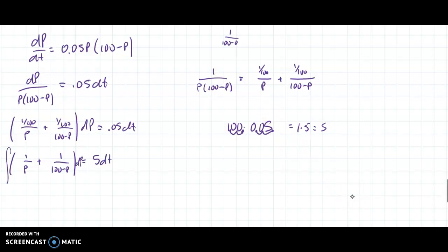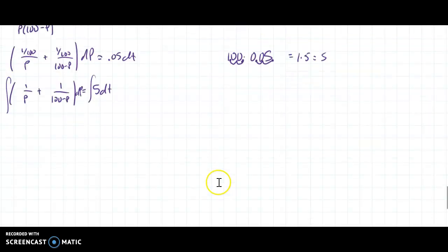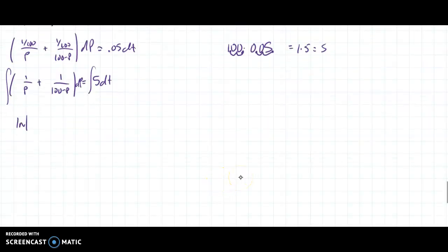Integrate. Sorry, we've got a dP here that I didn't write. Integrate. ln|P|. Don't forget your minus here because of the chain rule. ln|100 - P| = 5t + a constant.